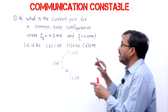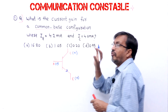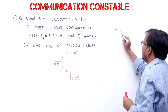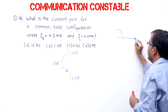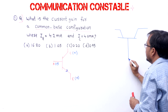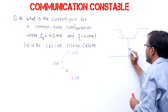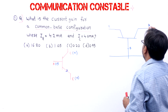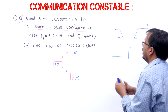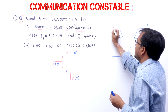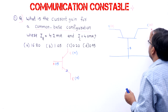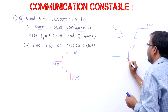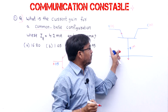Here in this question, it is asking which configuration — common base configuration. In common base configuration, the base terminal is common for both input and output. In this diagram, the base terminal is common, the emitter terminal is the input side, and the collector terminal is the output side. The arrow mark indicates this is an NPN transistor.